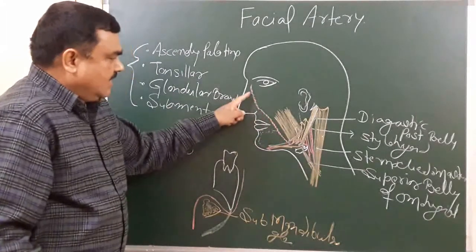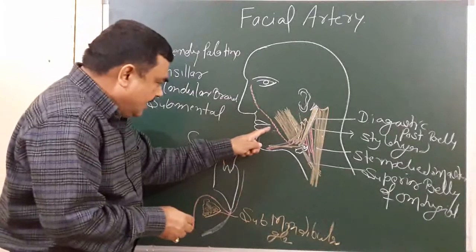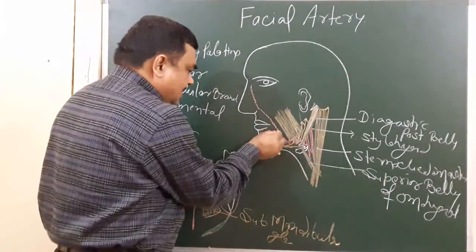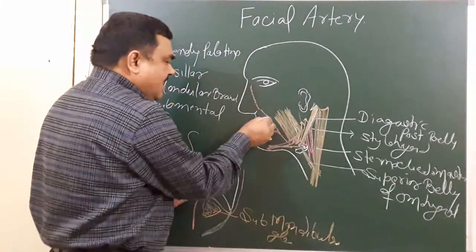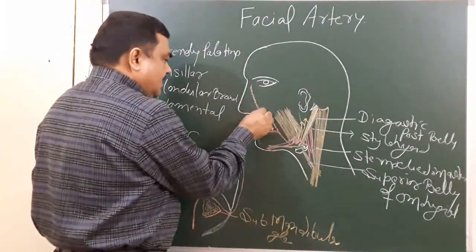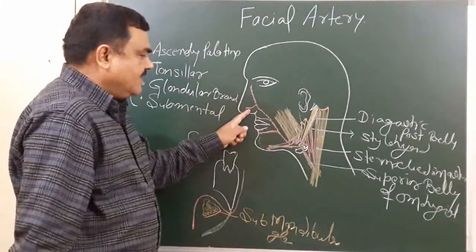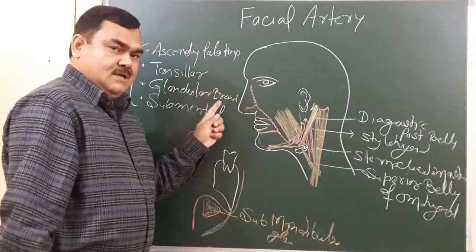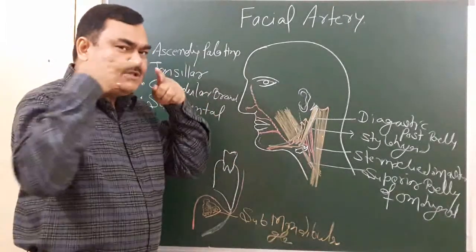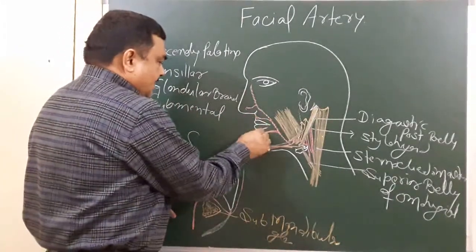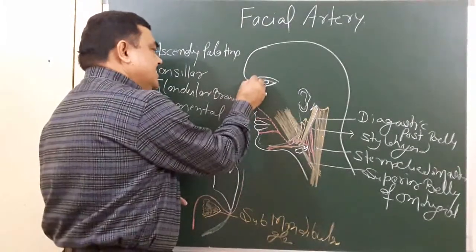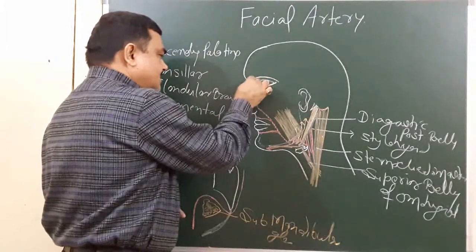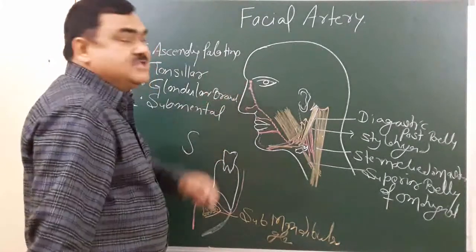Now the course of the facial artery in the face: it runs about half an inch lateral to the angle of the mouth, passing upward and forward. It gives the inferior labial branch, the superior labial branch, and the lateral nasal branch — supplying the dorsal aspect and lateral side of the nose, the upper lip, and the lower lip respectively. It also anastomoses with the artery of the opposite side, and superiorly it anastomoses with the dorsal nasal artery, which is a branch of the ophthalmic artery.